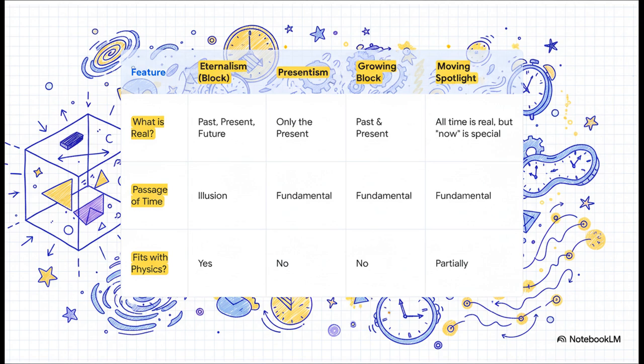Then there's the growing block, which is a sort of compromise. It says the past and present are real, and the future grows into existence. But that requires a special edge of reality, a universal now, which again, relativity says doesn't exist. The moving spotlight is another attempt. It says the whole block is real, but there's a special spotlight of nowness moving along it. But what is this spotlight? Physics has no place for it.